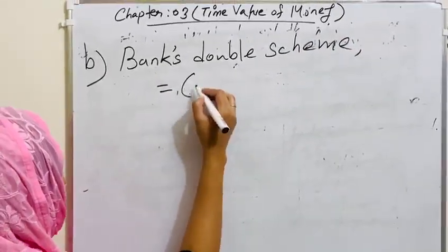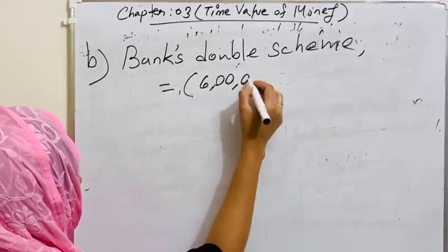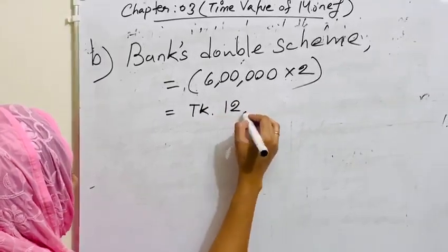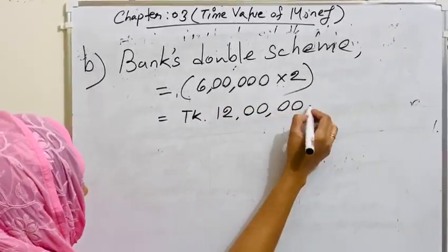6 lakhs double means 6 lakhs into 2, which is Taka 12 lakhs.